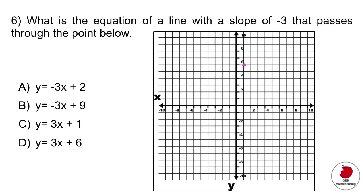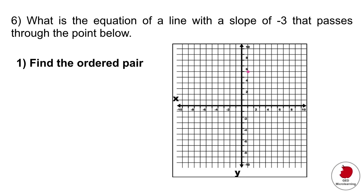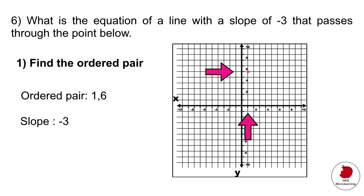Question 6 is another slope problem. You have to read a graph and answer: what is the equation of a line with a slope of minus 3 that passes through the point shown? First, find the coordinate from the graph. The x value is 1 and the y value is 6, so our ordered pair is (1, 6), and the slope is minus 3 as stated in the question.